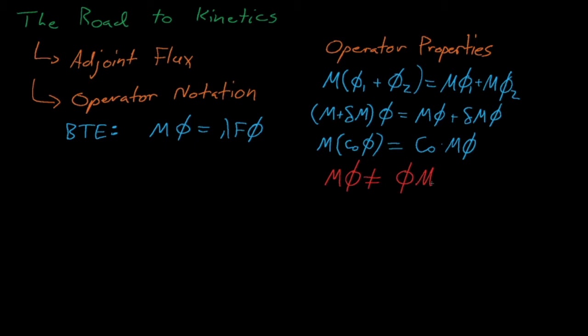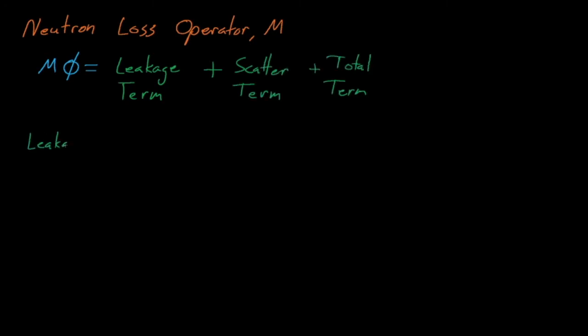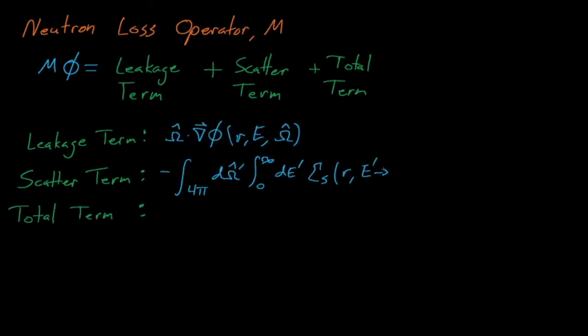Now let's dive into the Boltzmann transport equations. The first of the operators in the Boltzmann transport equation is the neutron loss operator M, which represents the neutron leakage, scattering source, and total collisional terms in the Boltzmann transport equations, as defined here. It may be a little confusing, but this expression I'm showing here is M operating on φ.